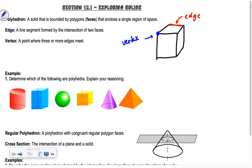Polygons are going to be the faces. The first one, a cylinder, is not going to be a polyhedron — because there are no polygons as its faces; it has that rounded side, and circles aren't polygons either. So that's a no. The next one is yes. A sphere? No, because we don't have those polygons. Then yes. The next one is no because of the circular base. And the last one is yes.